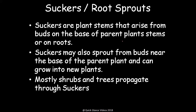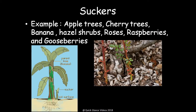Suckers, also called root sprouts, are plant stems that arise from buds on the base of the plant, stem, or root. Suckers may also sprout from a bud near the base of the parent plant and grow into a new plant. Most shrubs and trees propagate through suckers. Common examples include banana, apple tree, and cherry tree. In the case of rose, you may have seen small suckers coming out from the base of the plant.